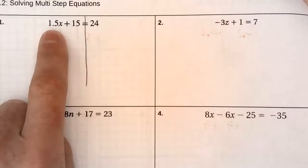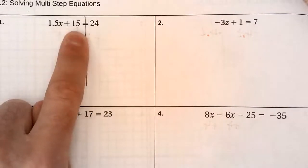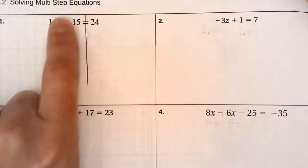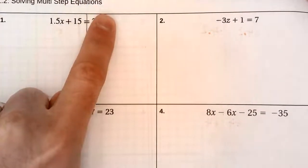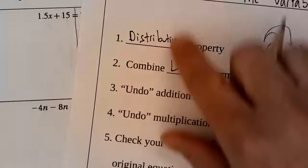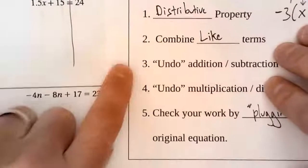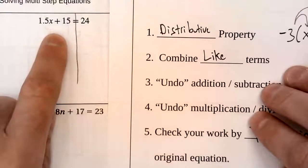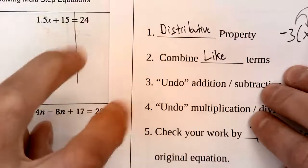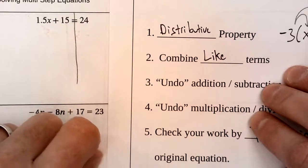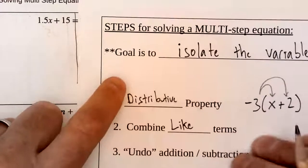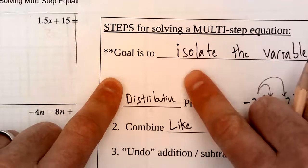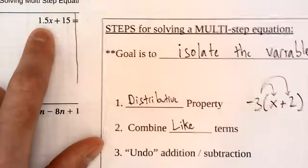Because that's a variable term, that's a constant term. I can't add those together. You also can't combine like terms over an equal sign. So in this case step one and two we're not going to worry about those. But I do have two different inverse operations to undo in order to get x by itself, aka isolate the variable.